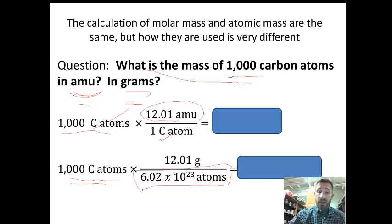I put atoms at the bottom, and then I put the mass of a mole of atoms at the top, which is 12.01 grams. The answer for the second question will be in grams. The answer for the first question will be in AMUs.